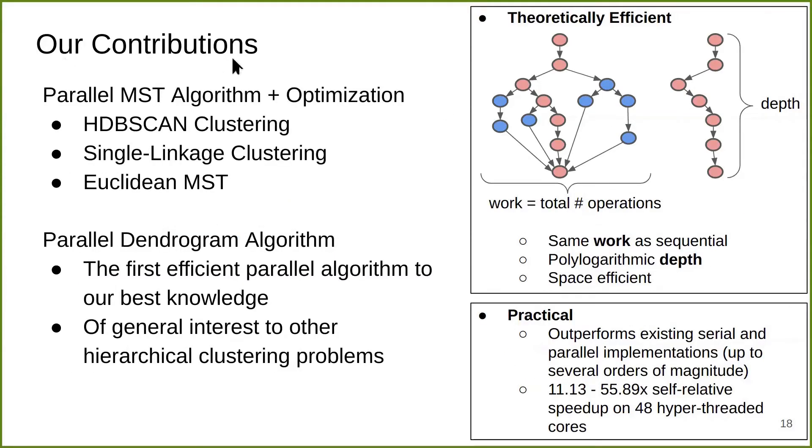This is a summary of our contributions. We design parallel algorithms for HDBSCAN, which mainly consists of two parts. The first part is parallel MST computation plus optimizations. We do this step for HDBSCAN clustering, which generalizes single linkage clustering. The MST algorithm also works for Euclidean MST. For the two clustering problems, we also design parallel dendrogram algorithm, which converts the MST into a cluster representation. Our parallel algorithm for the dendrogram, to our best knowledge, is the first efficient parallel algorithm to compute a dendrogram. We believe it's also of general interest to other hierarchical clustering problems.